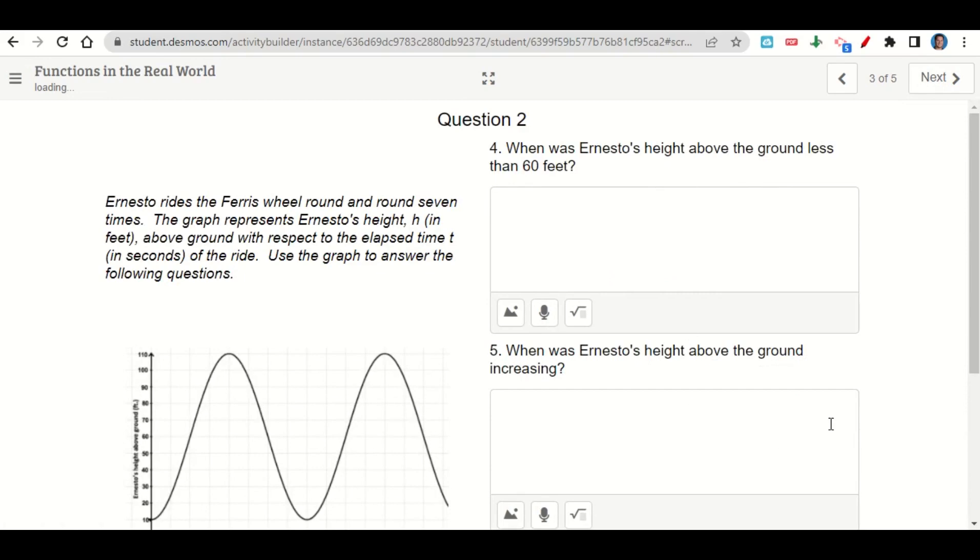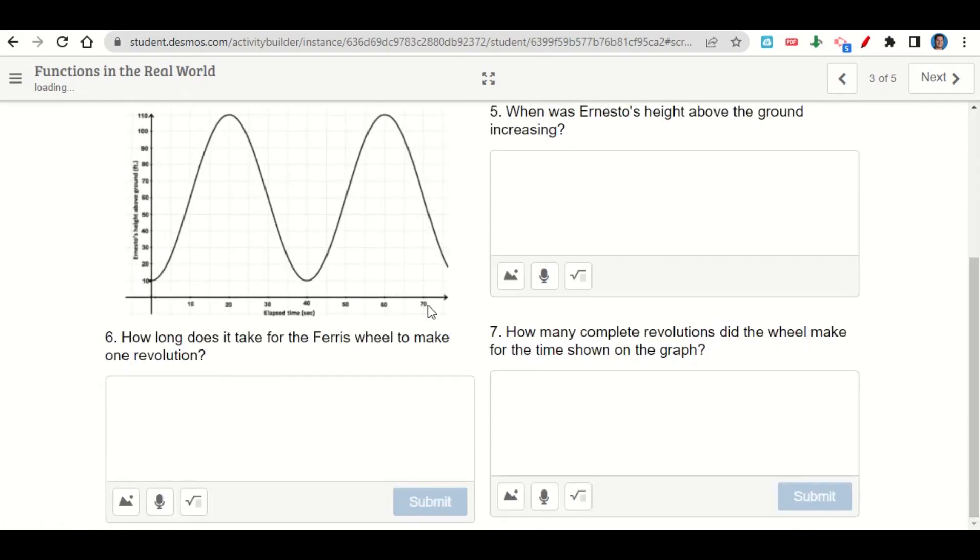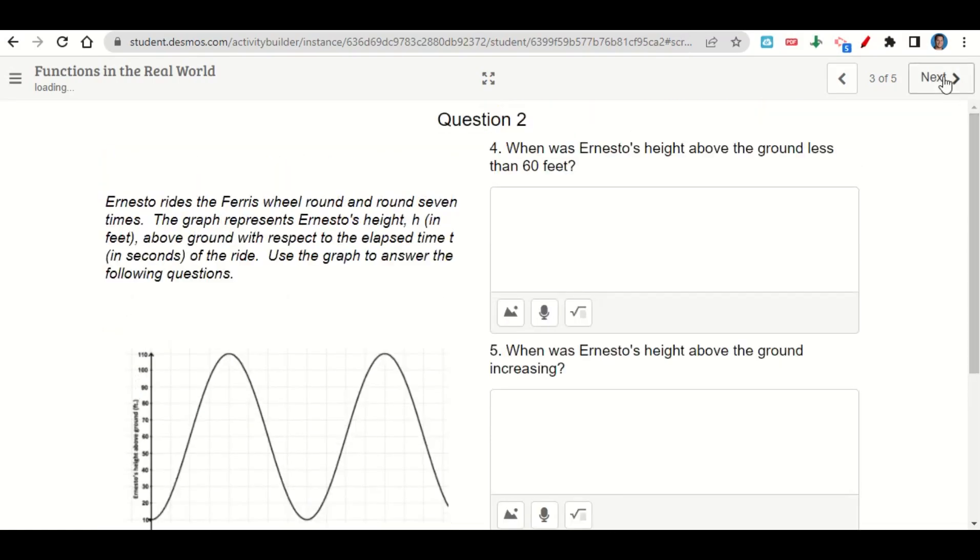We'll answer some more questions about Ernesto. When was he increasing? When was he less than 60 feet? So what intervals? How many complete revolutions did he make? He started here, and then there's one revolution. So he only had one complete revolution, and he got to almost a full second revolution. How long does it take to do one full revolution? Well, it goes here to there, so 40 seconds. And we'll click next.